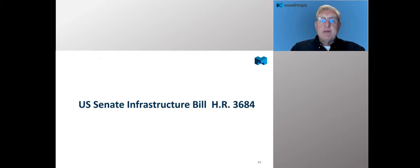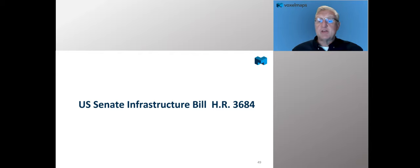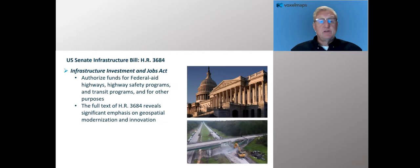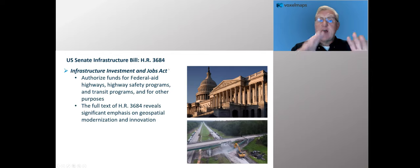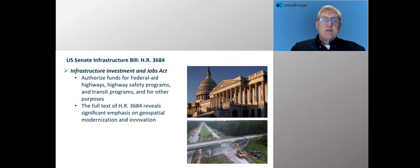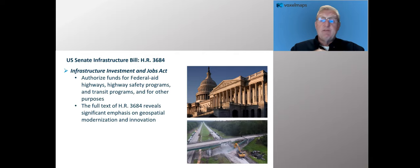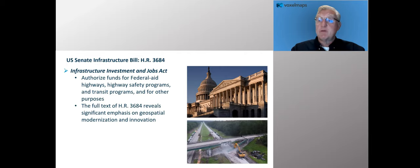Let's talk about what's happening on the Hill. The U.S. Senate Infrastructure Bill just got passed by the House — it's HR 3684. It's authorized funds for federal aid highways, highway safety, transit programs, and other purposes. The full text is about 2,702 pages. It's approximately 1.2 trillion dollars over eight years. It breaks down as: roads and bridges and major projects — $109 billion; electric vehicle infrastructure; electric buses and transit — $7.5 billion; airports — $25 billion; broadband infrastructure to get broadband across the entire country; power infrastructure; and infrastructure resilience. A lot of it is geospatial-oriented — good for us in the geospatial community.